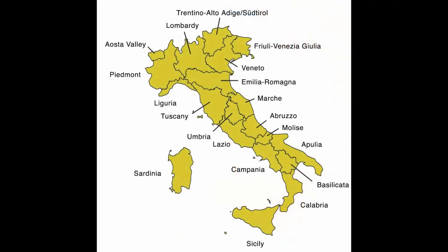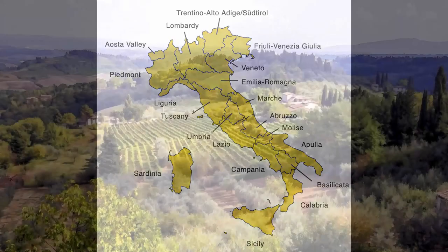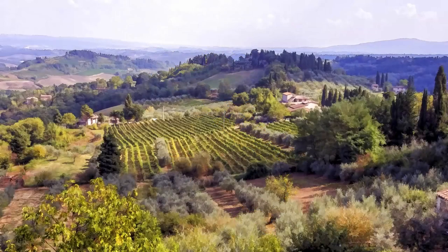Italy is divided into 20 administrative regions, which are similar to U.S. states or Canadian provinces. Each region has its own history, customs, and local dialects. Some regions, like Tuscany and Sicily, are well-known travel destinations.